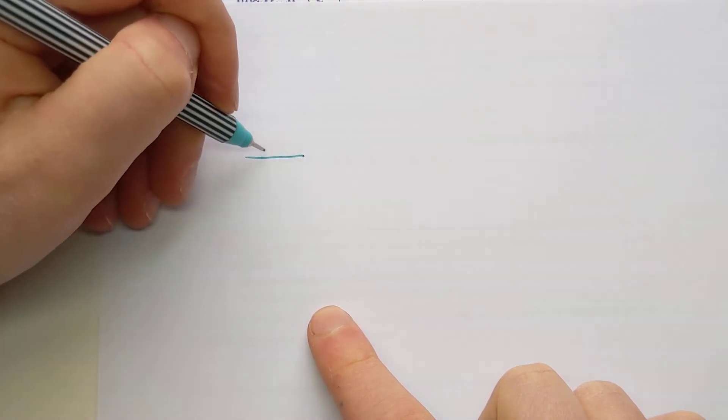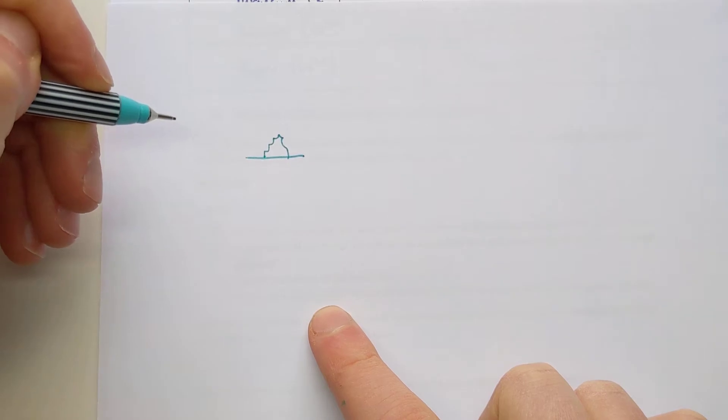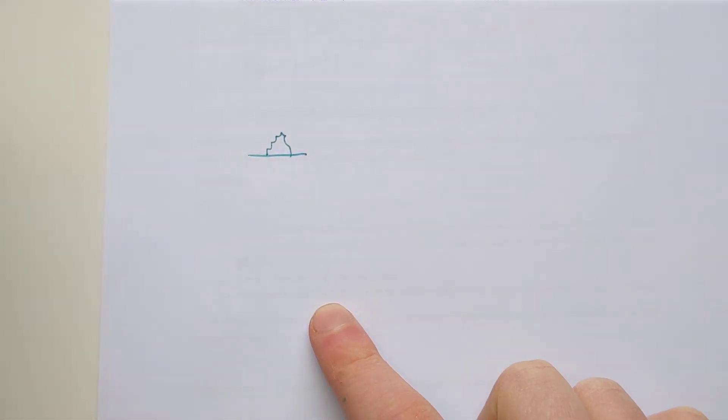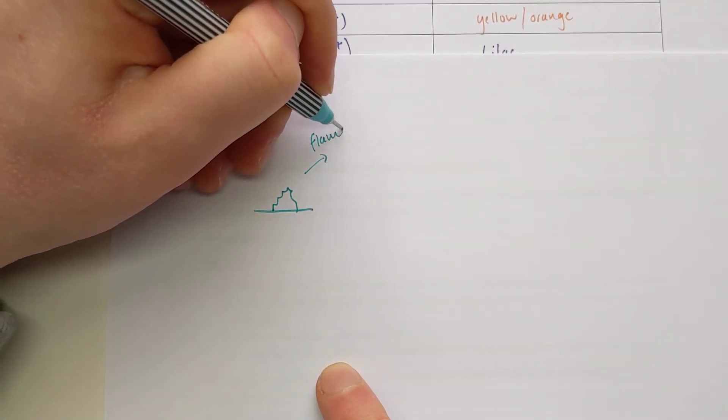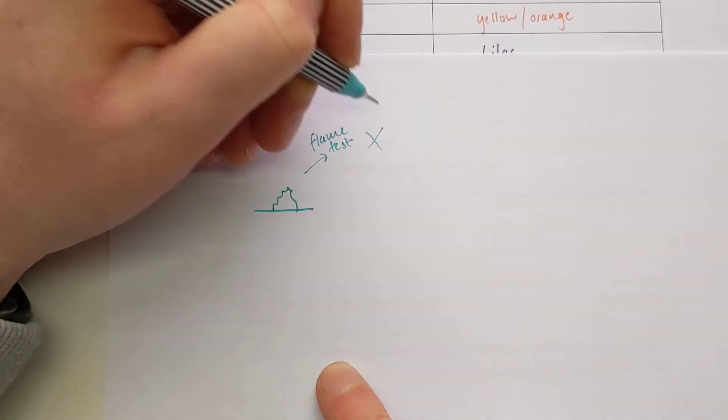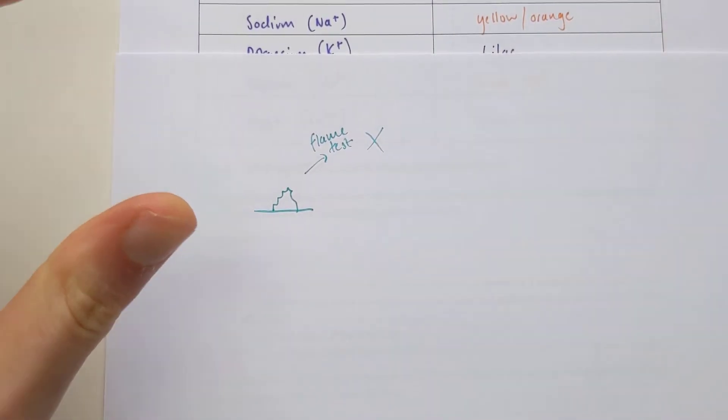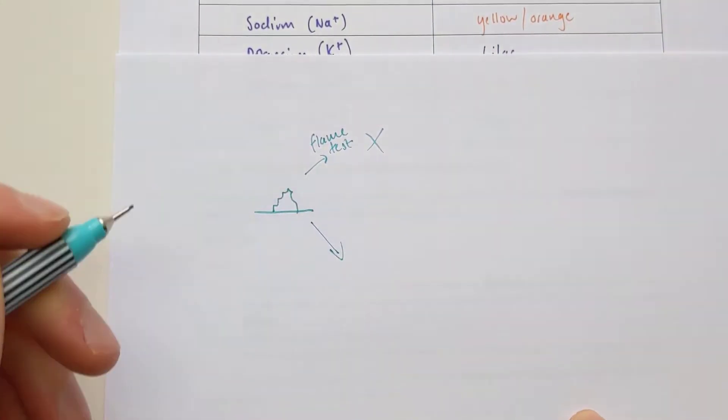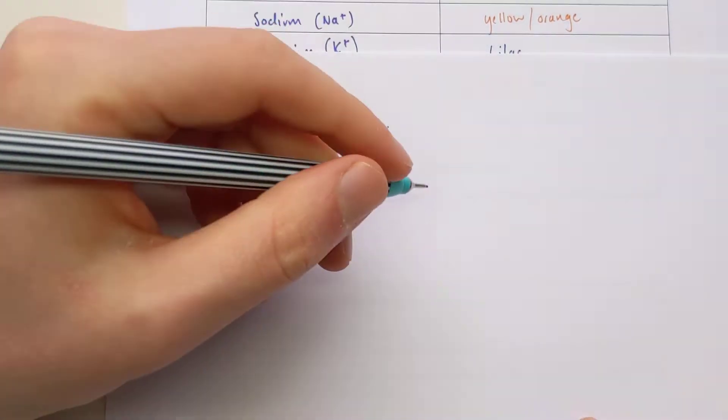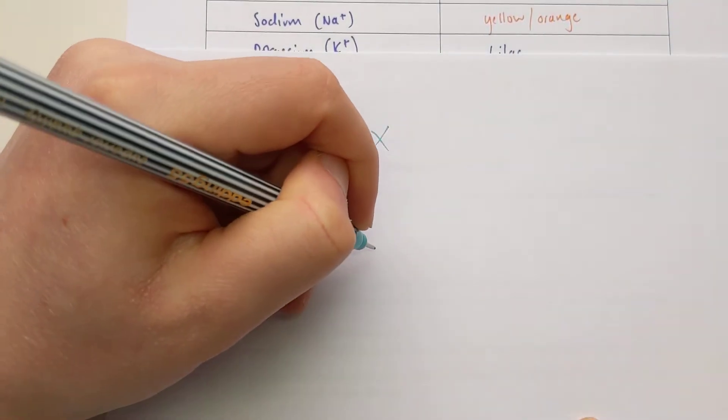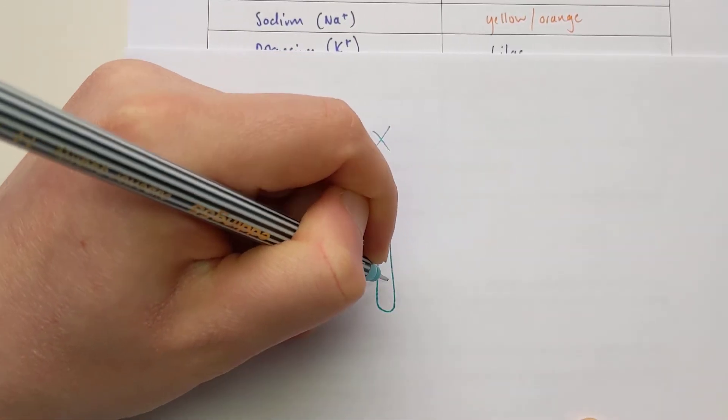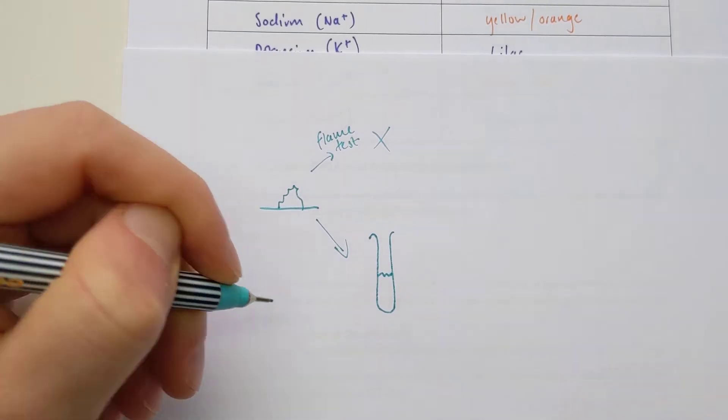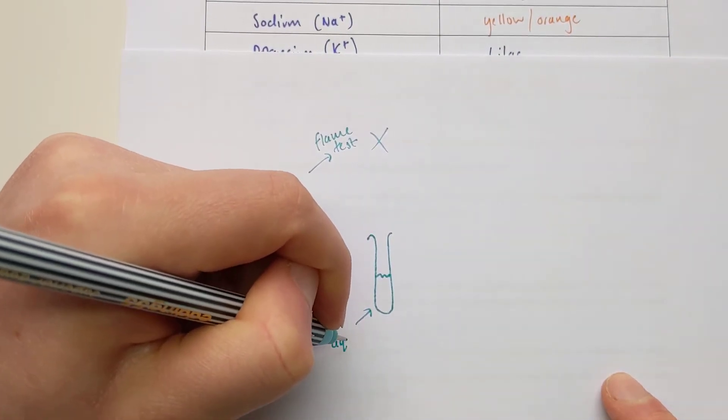The scenario we have here is similar to what we had before. We've got an unknown powder. I want to work out what's in it, what the cation is first. I've tried the flame test and nothing has worked in this example. I can't see any clear color. I then turn my attention to test number two. I can't do it as a powder. I'm going to dissolve it in water to make a solution in the boiling tube. That's an aqueous solution.